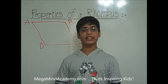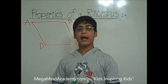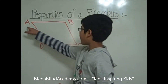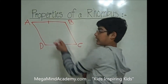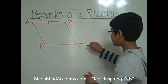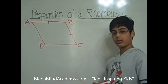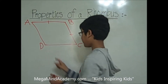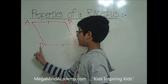Because all four sides are equal to each other, that means that side AB is equal to side BC, which is equal to side CD, which is equal to side AD.